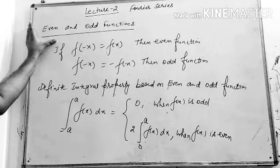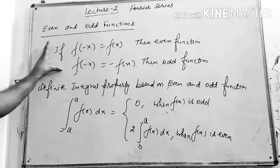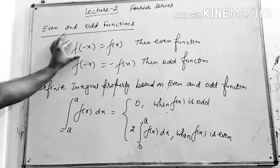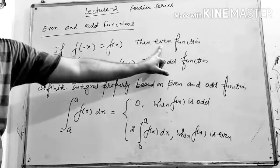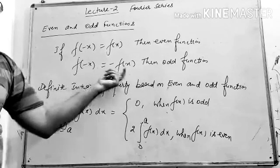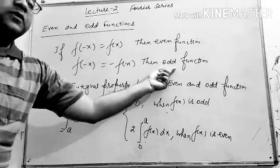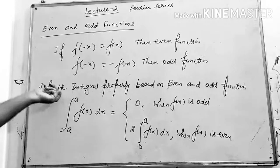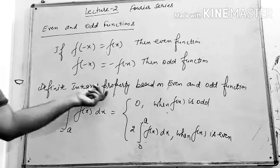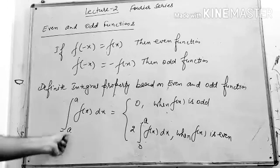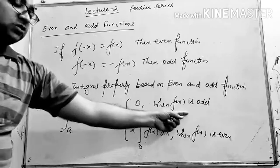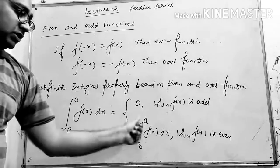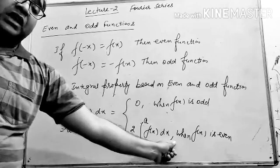You all already studied this in your schooling, but I want to revise it. If f(−x) = f(x), then this is known as an even function. If f(−x) = −f(x), then this is known as an odd function. The definite integral property: the integral from −a to a of f(x) dx equals 0 when f(x) is odd, and equals twice the integral from 0 to a of f(x) dx when f(x) is even.